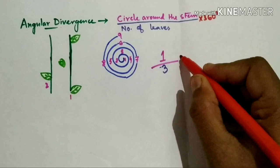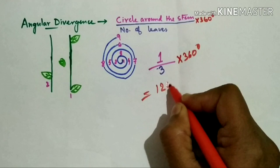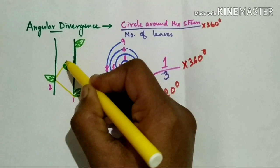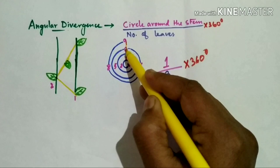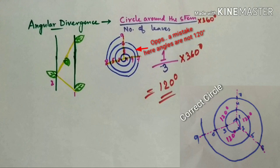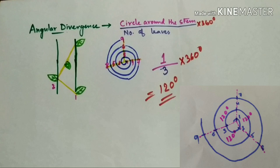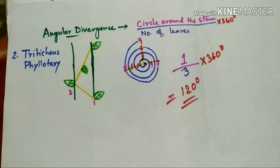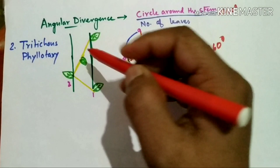So in one circle, three leaves are present. Therefore: 1 divided by 3, multiplied by 360 degrees, gives 120 degrees as Angular Divergence. This type of stem or leaf arrangement is called Tristichous phyllotaxy.